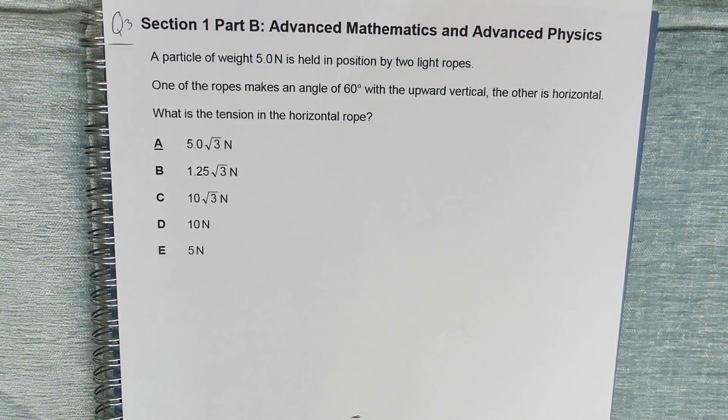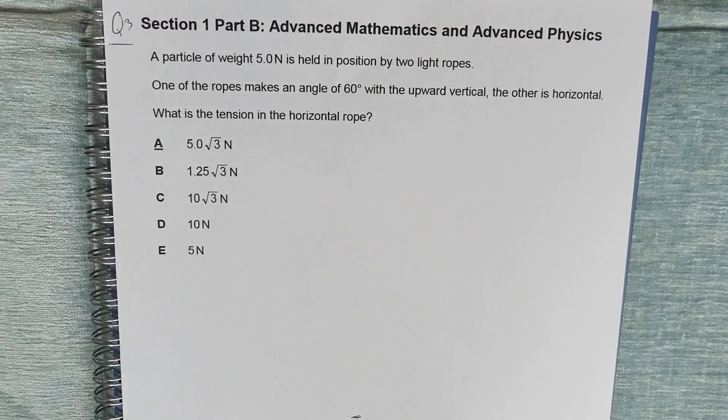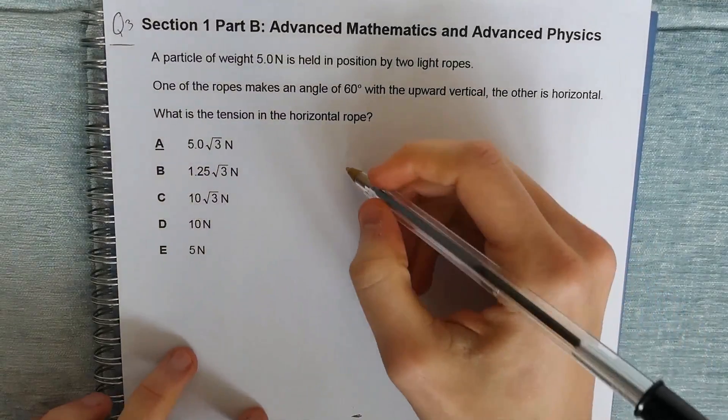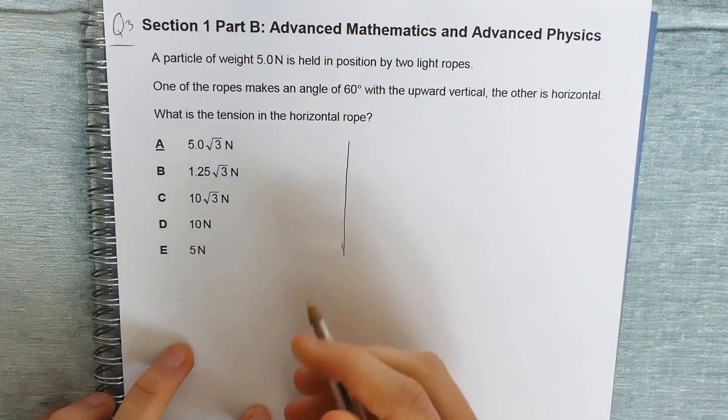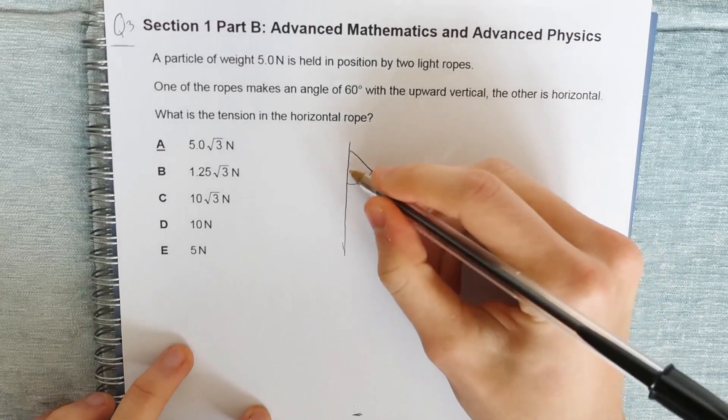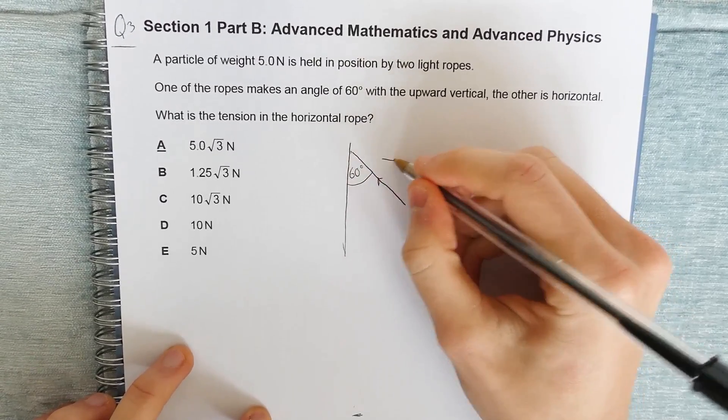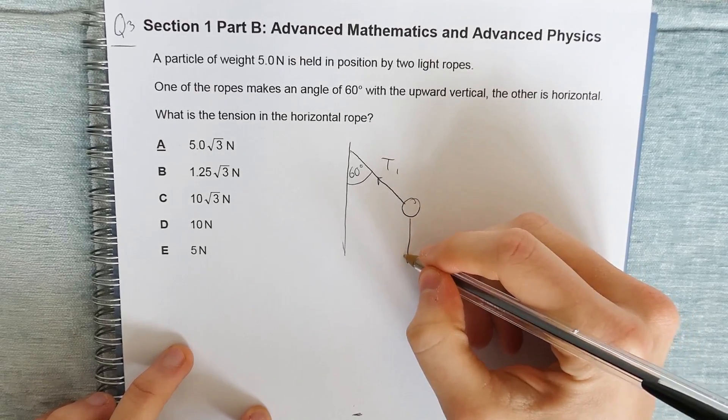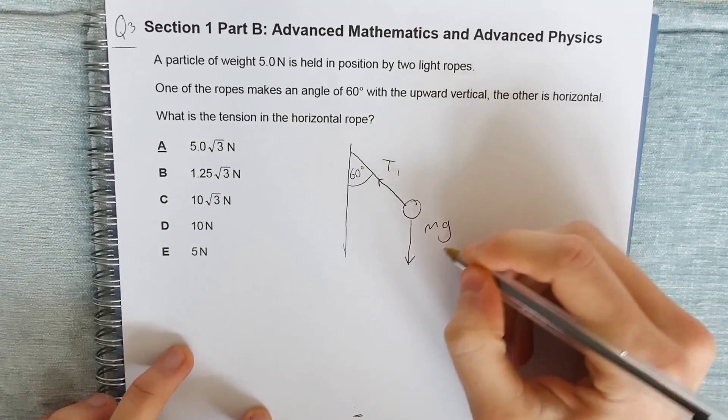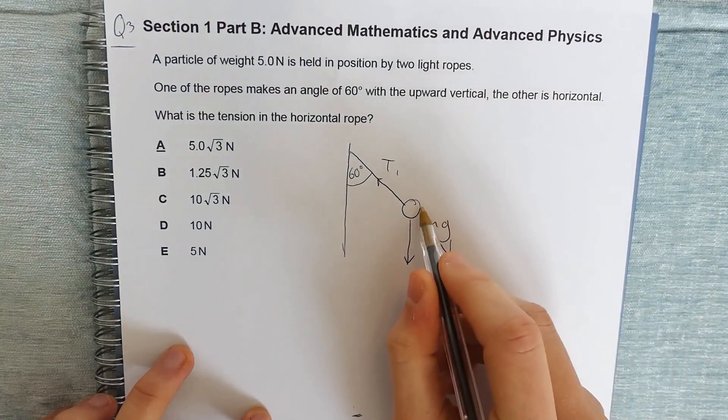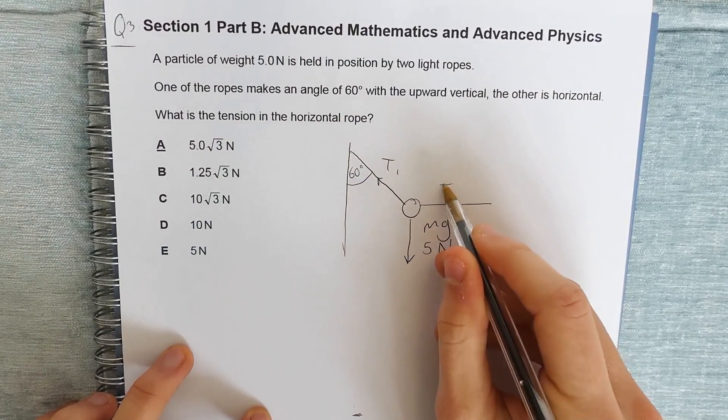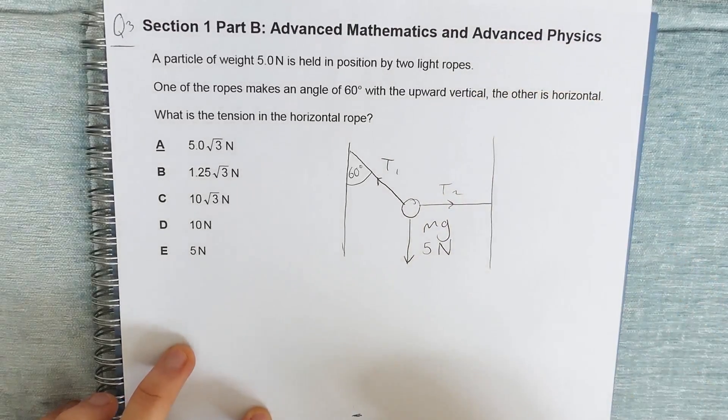So this is question 3, which is taken from section 1 part B. A particle of weight 5 newtons is held in position by two light ropes. One of the ropes makes an angle of 60 degrees with the upwards vertical, and the other is horizontal. What is the tension in the horizontal rope? So what might be useful is to draw a diagram to represent this. So let's have a wall that can be our upwards vertical, and our first force is acting at an angle of 60 degrees. Let's call this force T1. Here's our particle, and that has the weight mg, which is 5 newtons, acting upon it. And we also have a second rope, which has a tension of T2, and that's going to be attached at a different place.